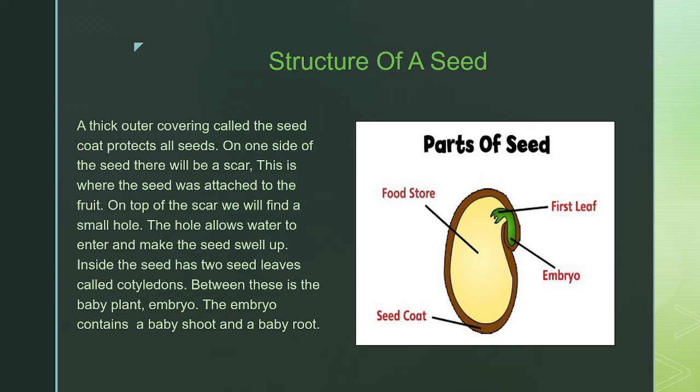A thick outer covering called the seed coat protects all seeds. On one side of the seed there will be a scar. This is where the seed was attached to the fruit.